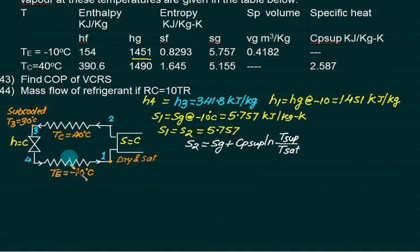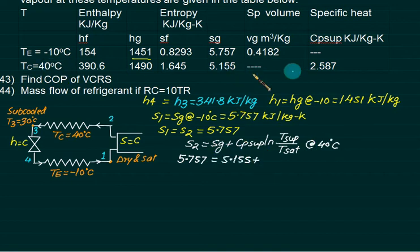Soup is the actual temperature. The evaporator and condenser temperatures are saturated. S2 is 5.757 at 40 degrees. At 40, what is the value of Sg? Since Cp soup is given, all temperatures as a ratio must be in Kelvin. T soup is T2 plus 273 divided by T saturation. For 2, Tc is saturation at 40.